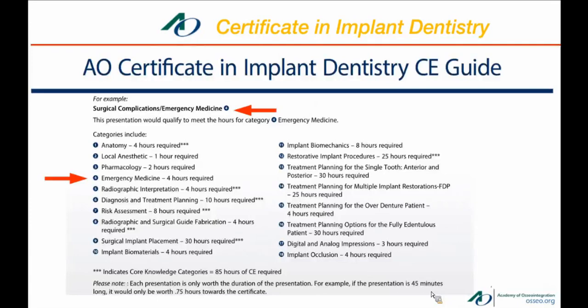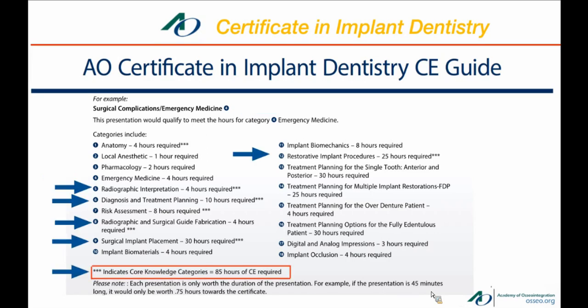Here's an example: 'Surgical Complications in Emergency Medicine' has a number four next to it. There are 18 required categories, and number four corresponds to emergency medicine. You'll also notice that asterisks appear next to some categories, indicating those considered core or basic knowledge: radiographic interpretation, diagnosis and treatment planning, radiographic and surgical guides, surgical implant placement, and restorative implant procedures. Those are the core knowledge categories.